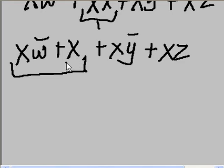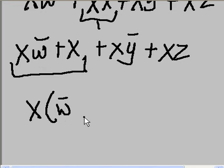Let's factor x out of these two terms. So I get x times what gives me w-naught, and the answer is w-naught. Bring down the OR. x times what gives me x? Answer 1.